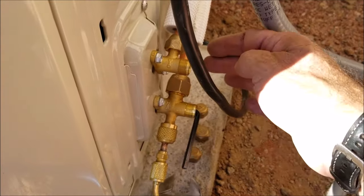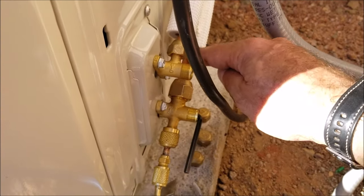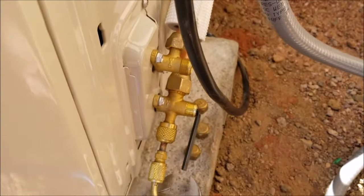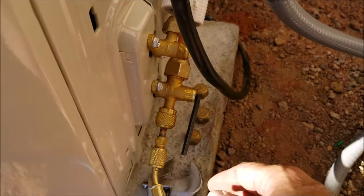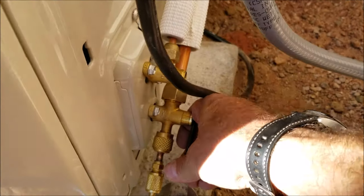That's the main goal when you vacuum this down: to make sure that this line set is in a vacuum and has no leaks. So I'm going to go and let this refrigerant in.